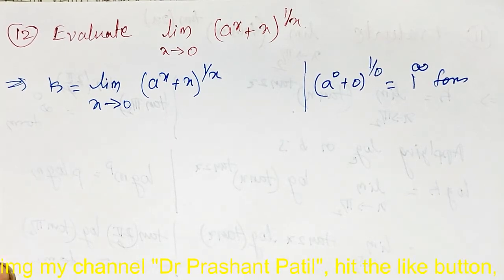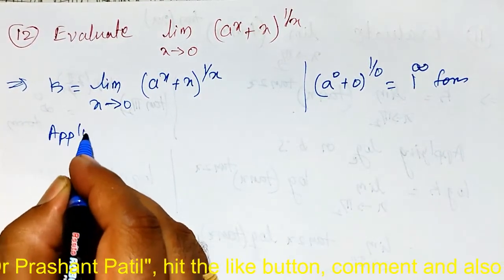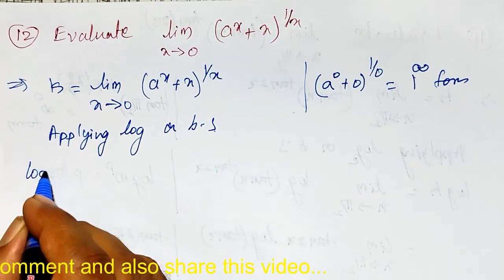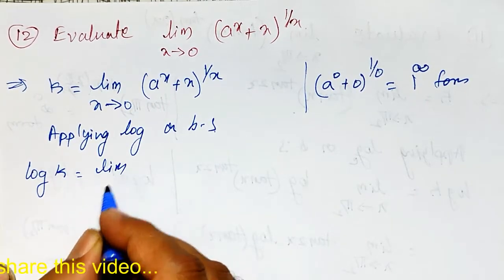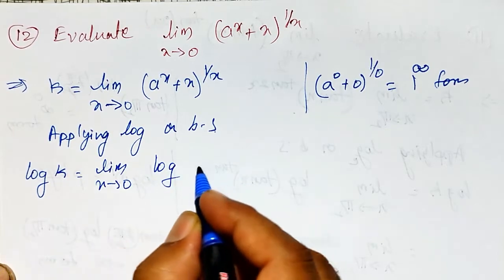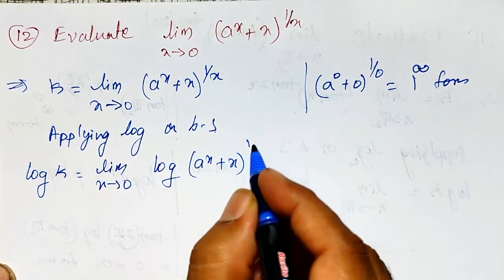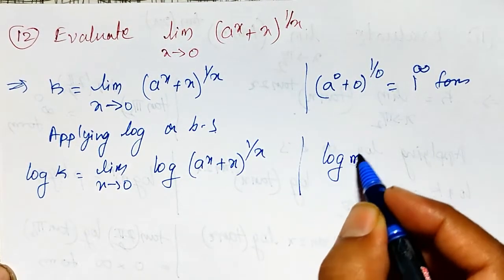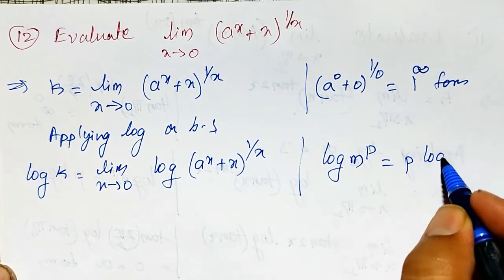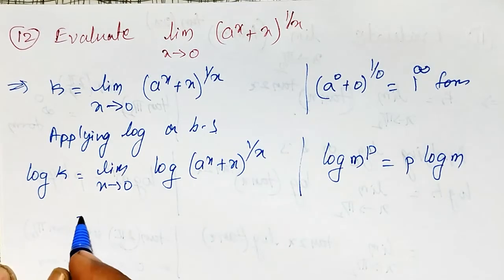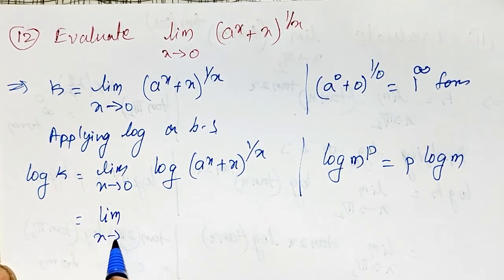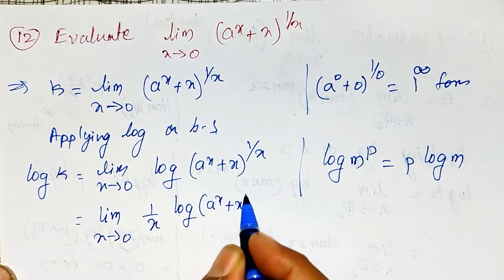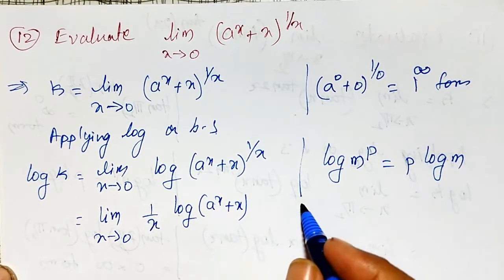To convert that, I apply log on both sides. Applying log on both sides: log k is equal to the limit as x tends to 0 of log of (a raised to x plus x) whole raised to 1 by x. Using the property log(m to the power p) = p·log(m), I write it as the limit as x tends to 0 of 1 by x into log of (a raised to x plus x).